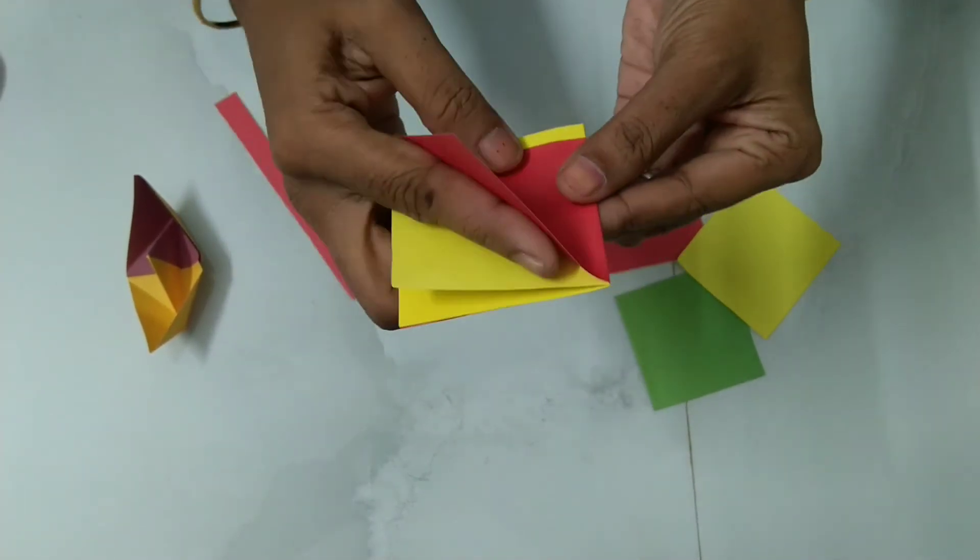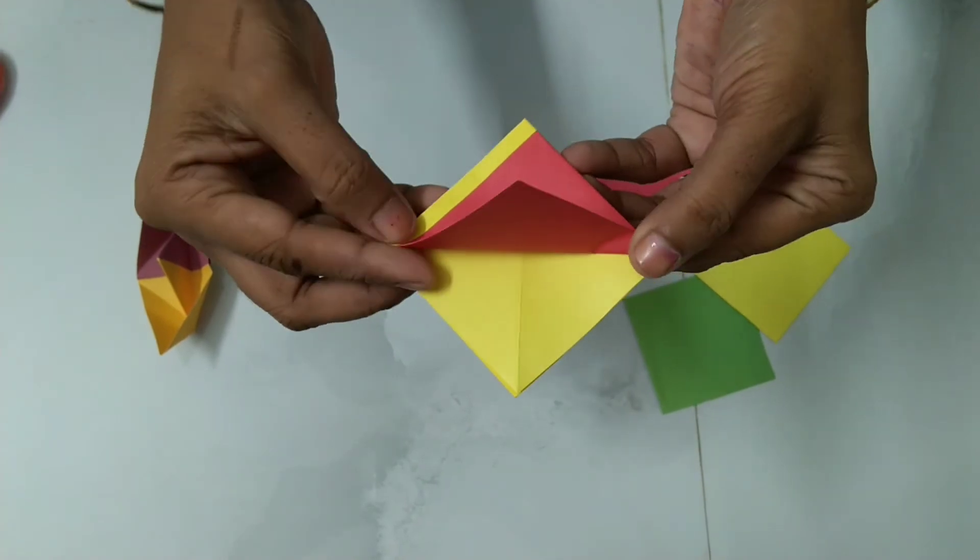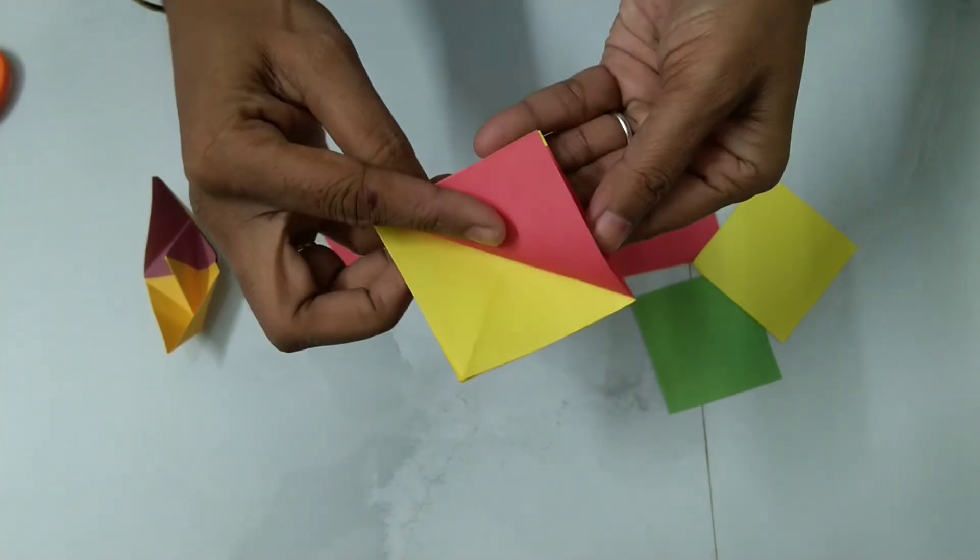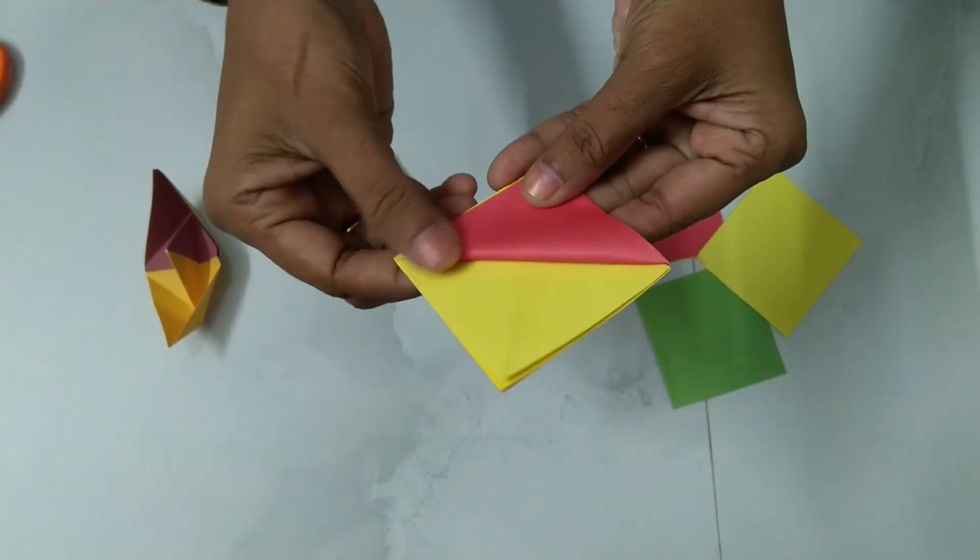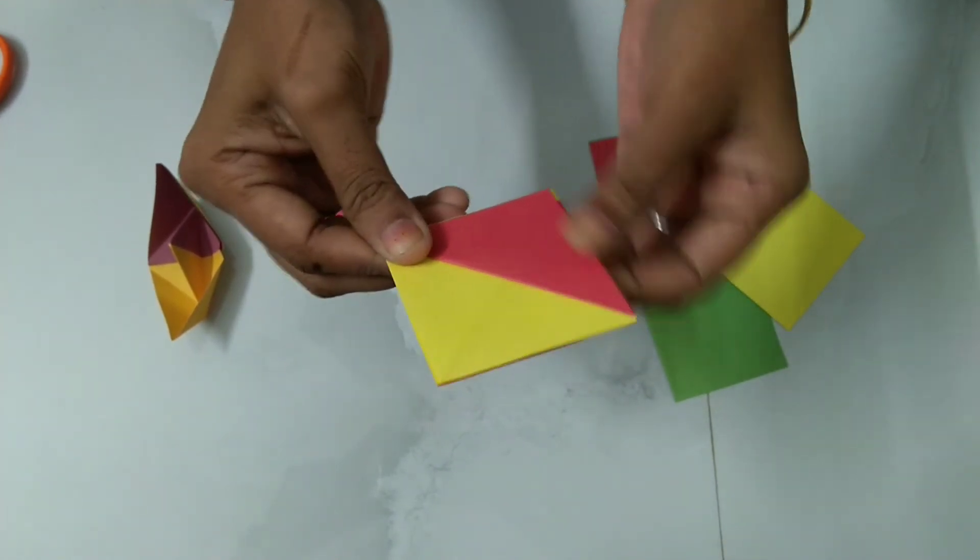So first opening of this paper, you have to fold at the back side, only one opening of that paper. In triangle shape, you have to fold back side like this.